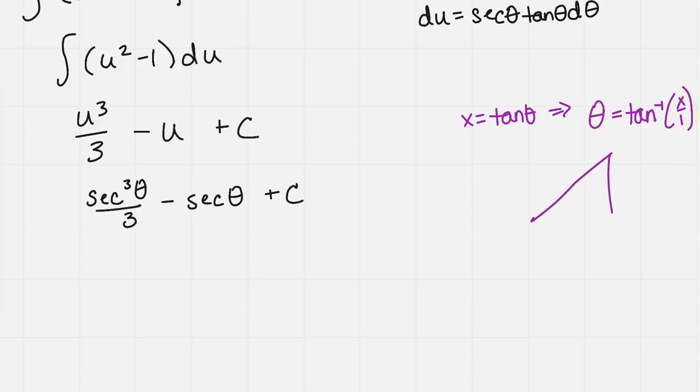If we utilize our right triangle trigonometry here, and we let theta be in the bottom left angle, and our right angle is on the bottom right, then I have the inverse tangent x over 1, opposite over adjacent. My hypotenuse would thus be square root of 1 plus x squared using Pythagorean theorem, because 1 squared plus x squared equals c squared.